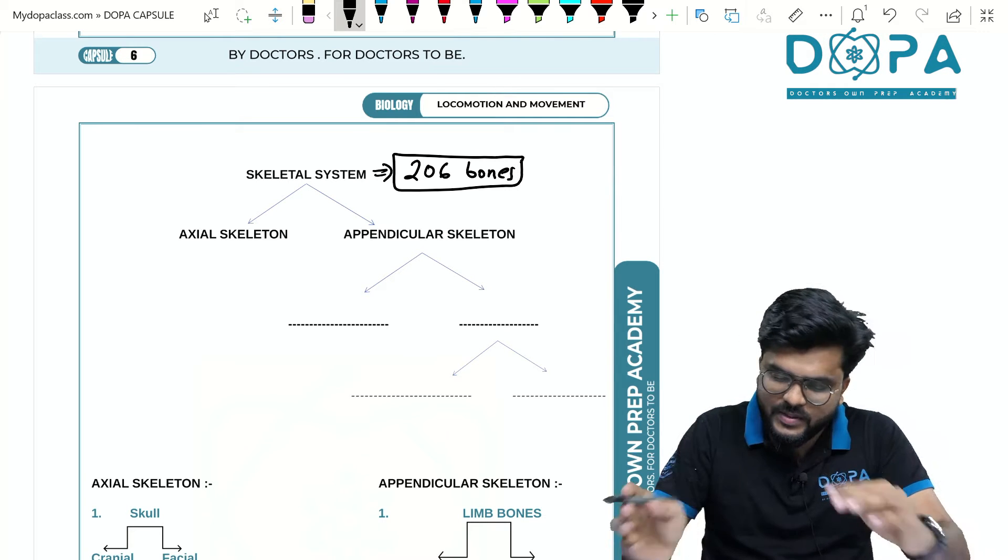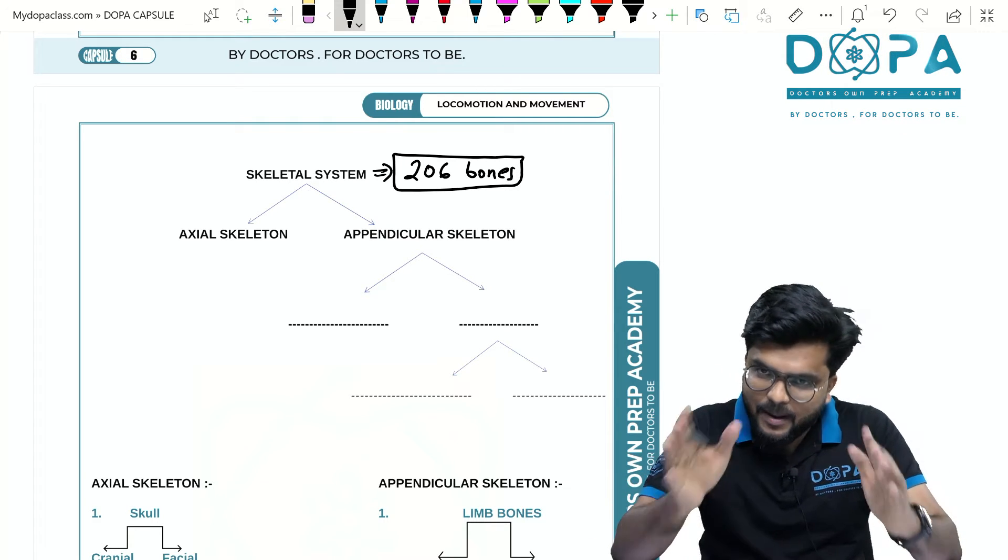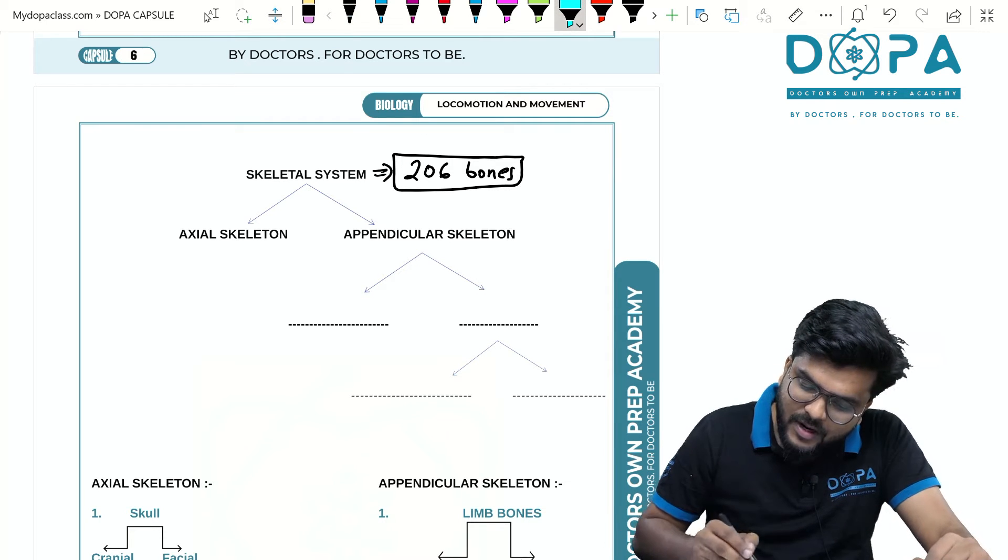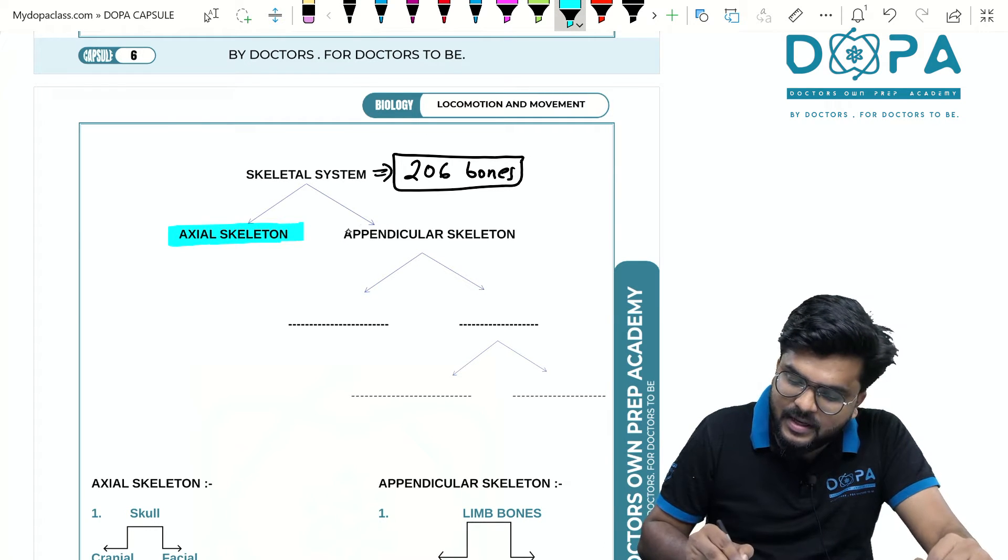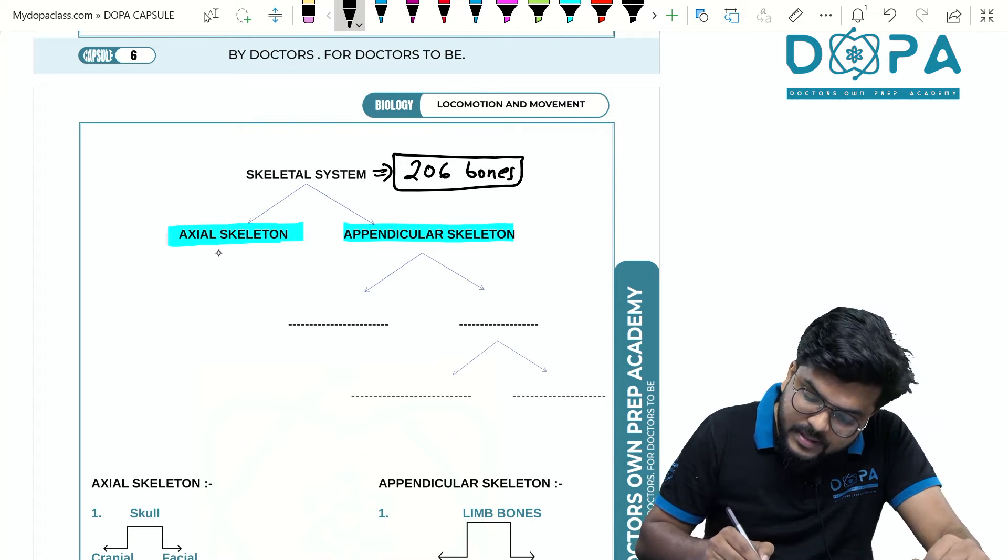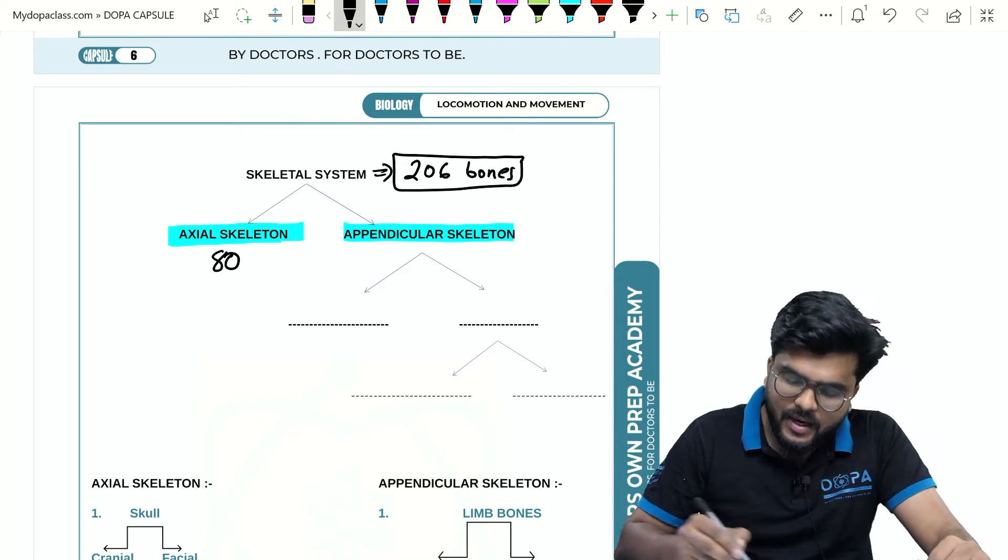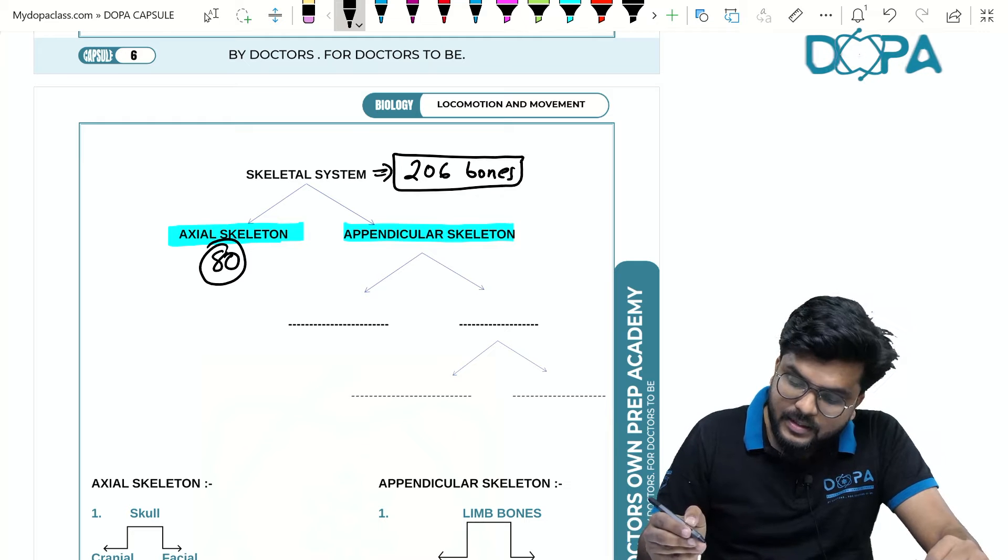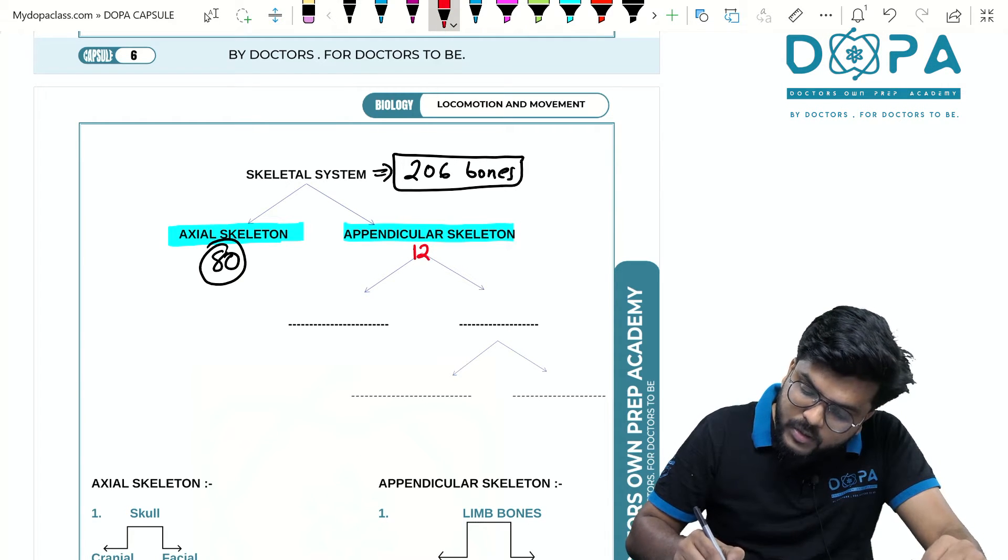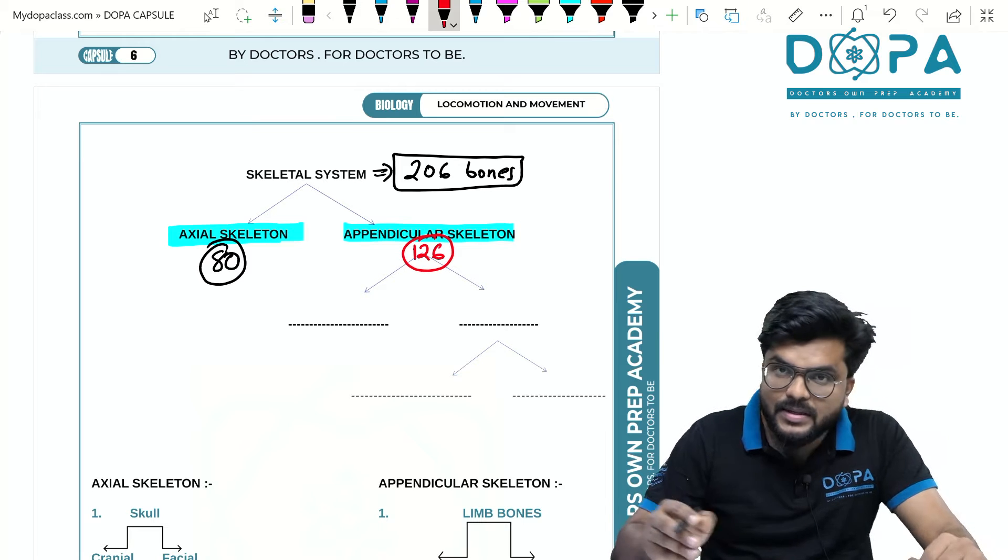The skeletal system is mainly divided into two parts: axial skeleton and appendicular skeleton. Axial skeleton totally comprises 80 bones. The appendicular skeleton has 126 bones which is actually distributed over limb bones and girdles.